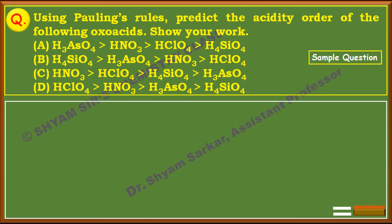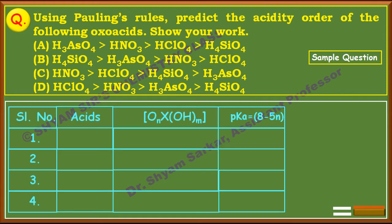Let's come to this example. We will make a chart with serial numbers one through four. H₃AsO₄ is the first acid. It can be written in the form OₙX(OH)ₘ. For H₃AsO₄, it is written as O₁As(OH)₃, so n = 1. Using pKa = 8 − 5n, we get pKa = 8 − 5×1 = 3.